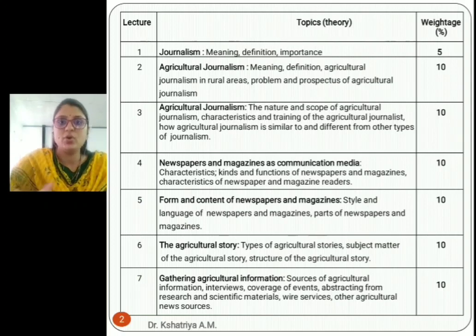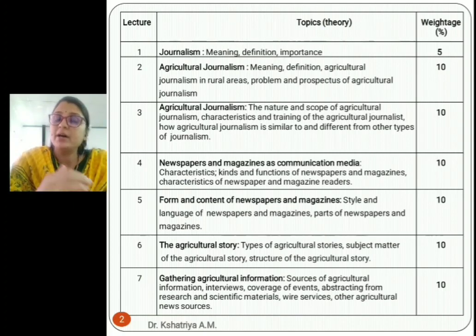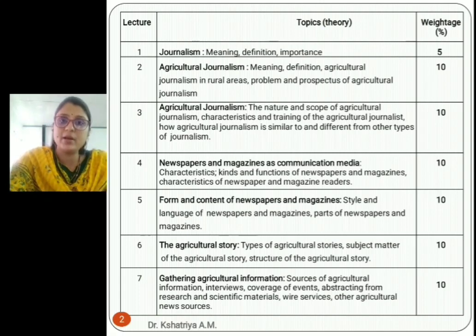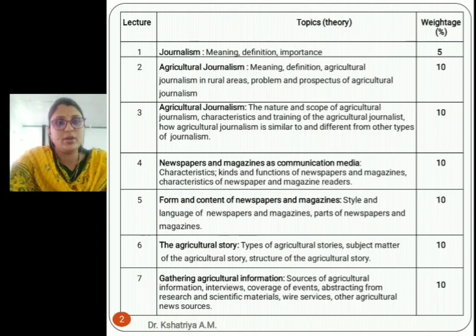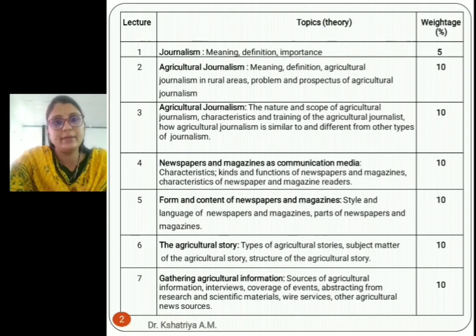The next topic is Newspaper and Magazine as a Communication Media. In agricultural journalism, newspapers and magazines play a very important role in transferring agriculture-related information to farmers — recent information, success stories, and agriculture stories through magazines. We are going to discuss their characteristics, kinds, functions, and reader characteristics. This topic is about ten marks.